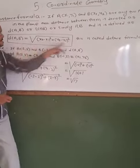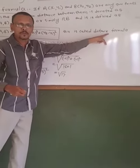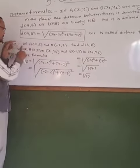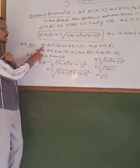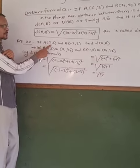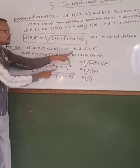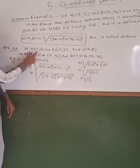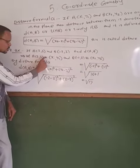This is called the distance formula. For understanding this formula, we take an example. If A(2,3) and B(-2,2), find the distance AB.